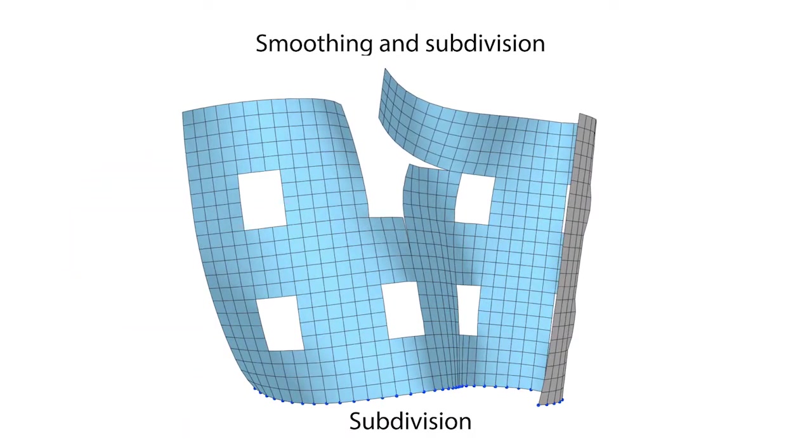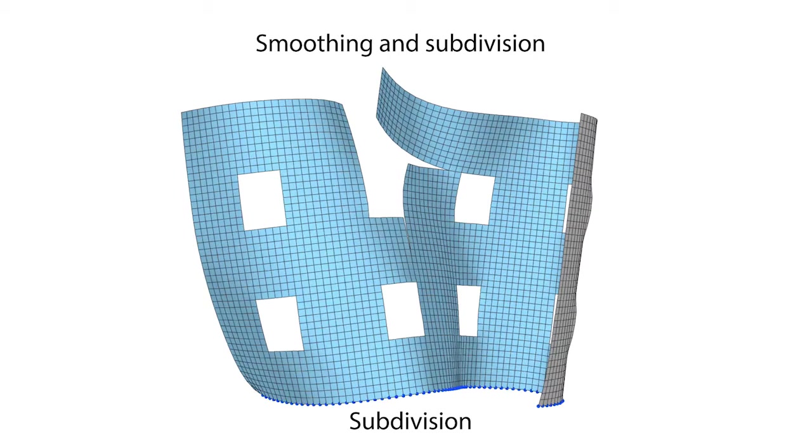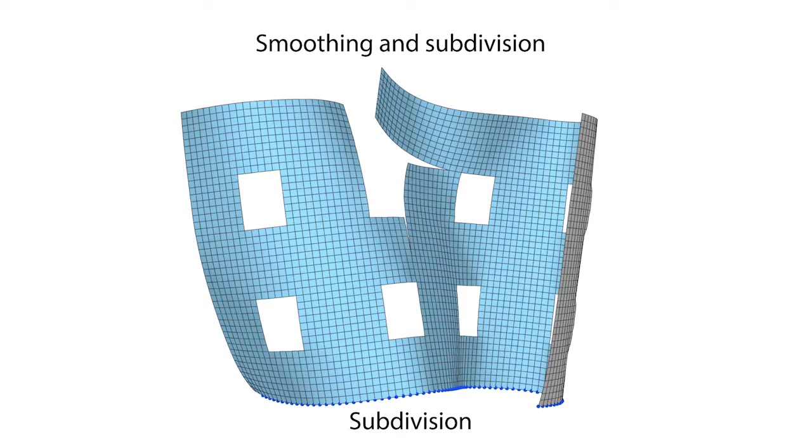We further show how to implement a subdivision operator as a combination of Catmull-Clark and our DOG smoothing flow.